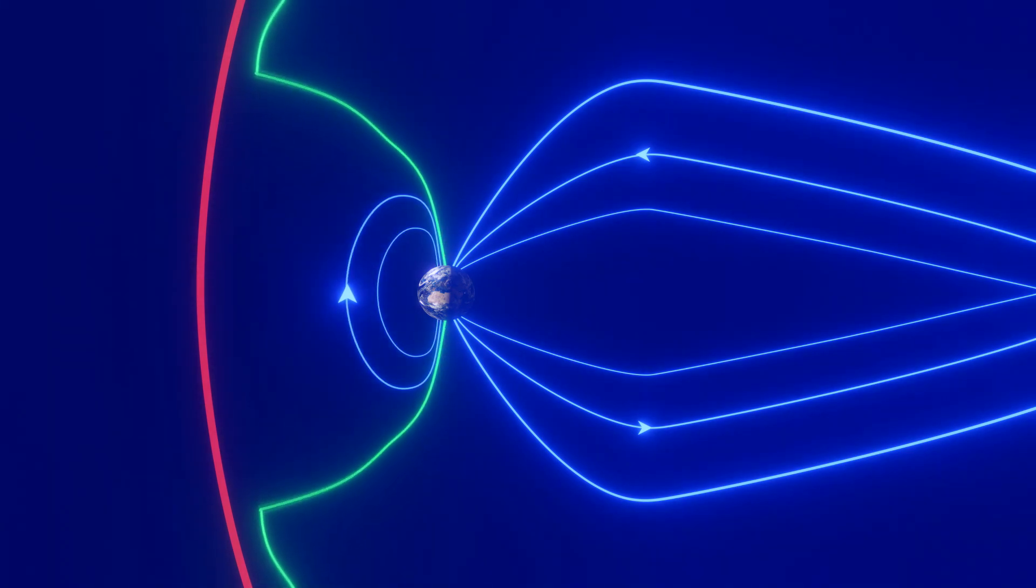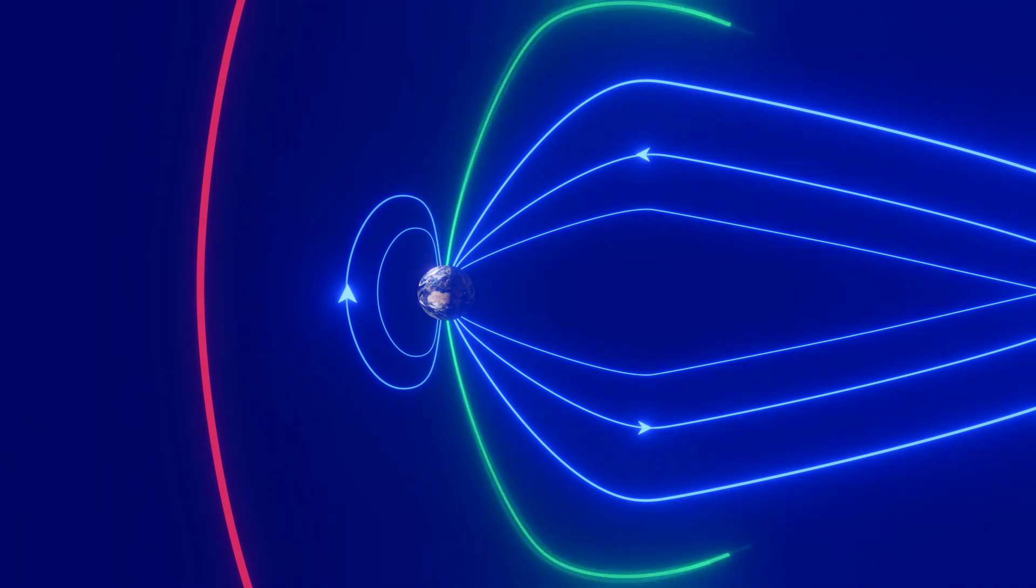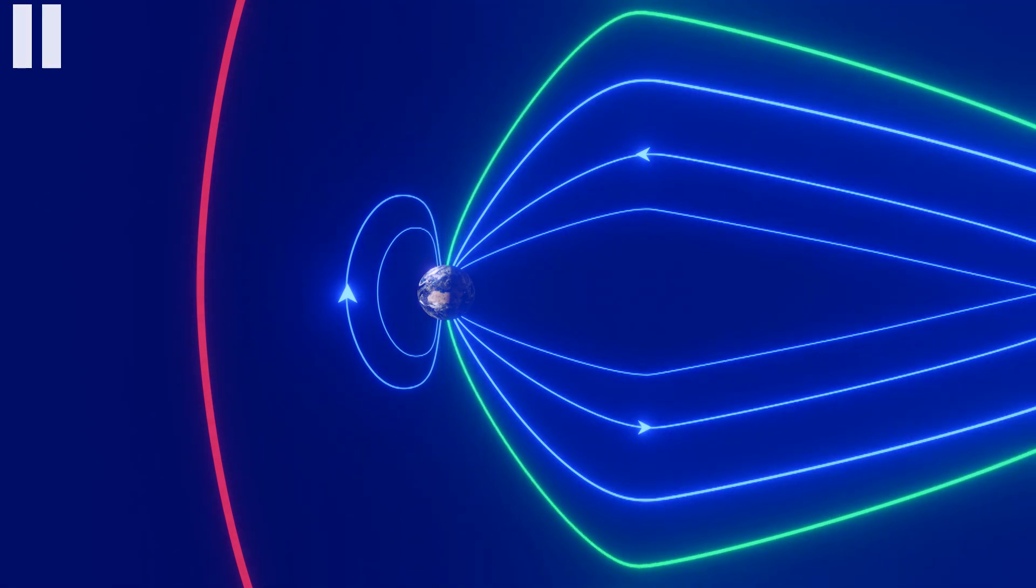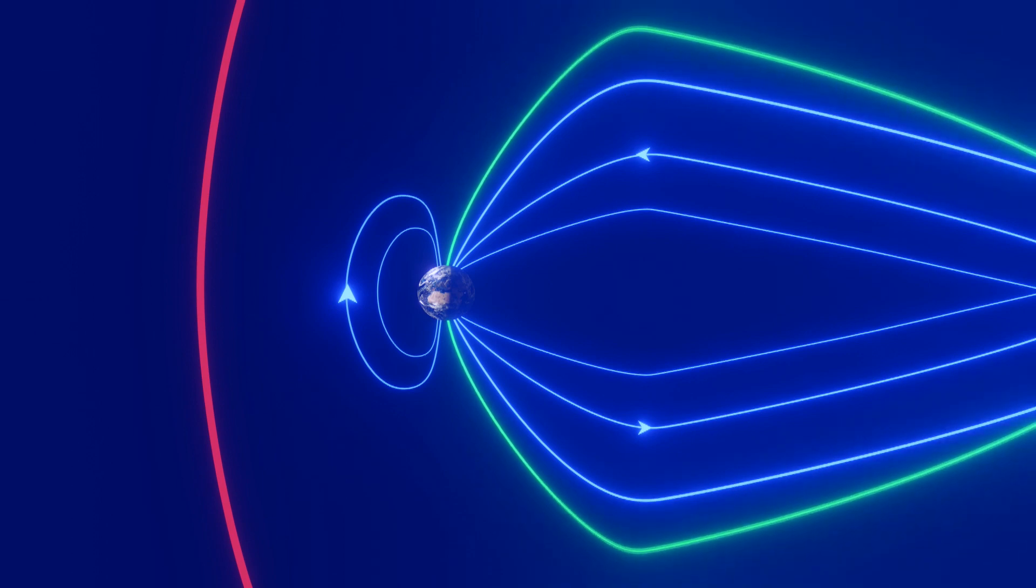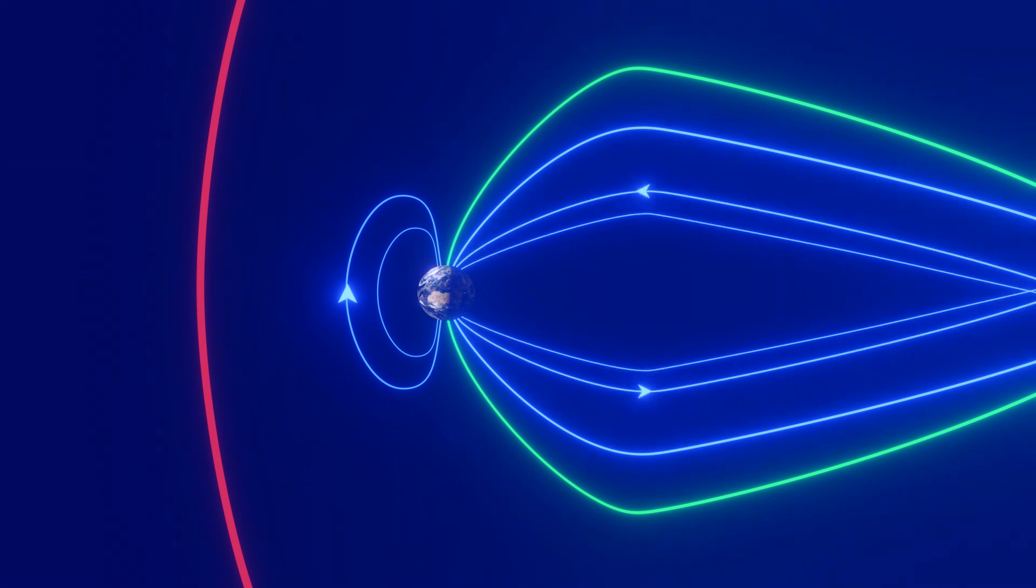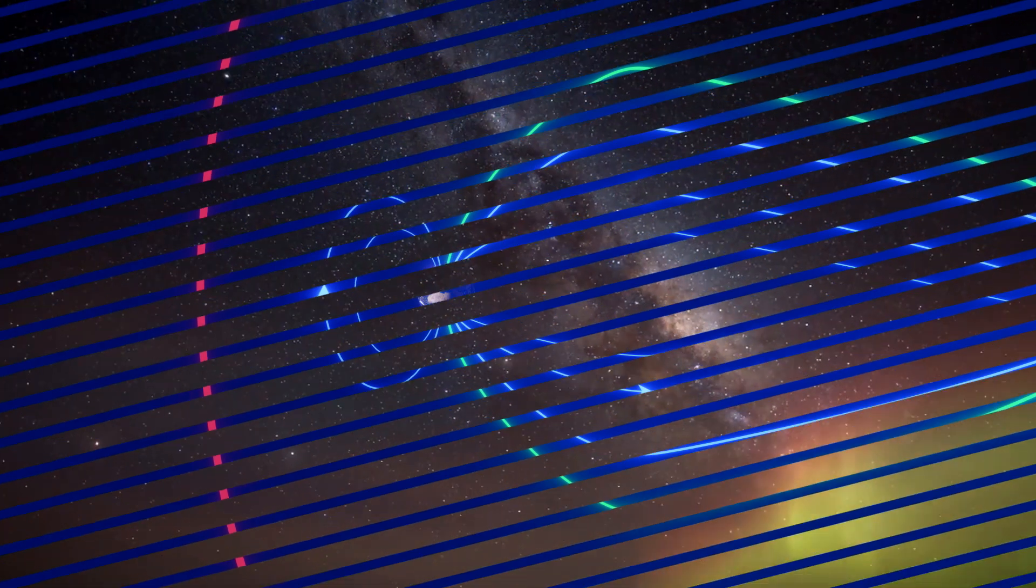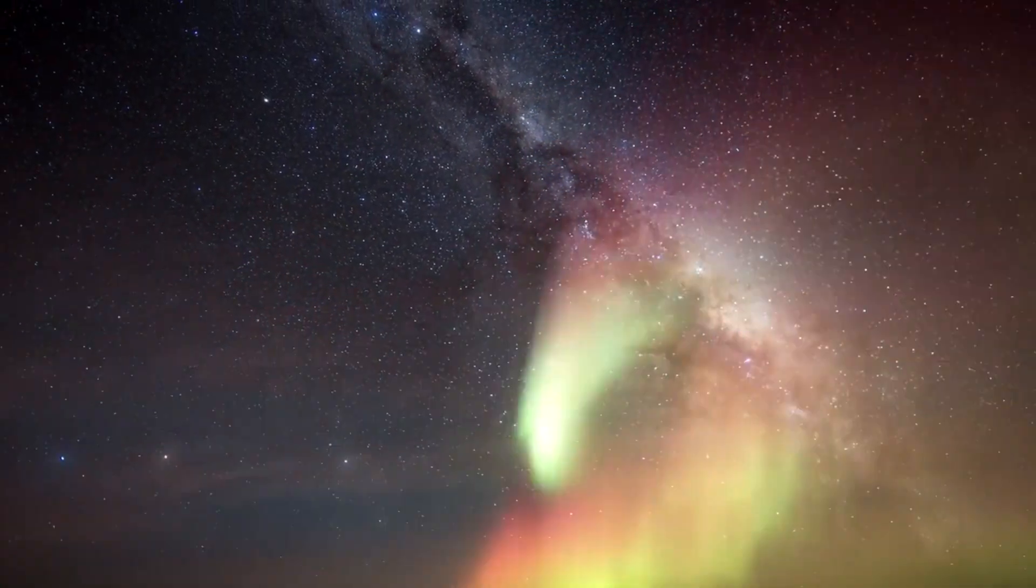The field lines just mentioned snap back to the magnetic tail and form closed field lines once again. In turn, this exerts more pressure on the magnetic tail, which closes inwards. Then the opposing magnetic field lines of the magnetic tail reconnect, accelerating ionized particles from the Van Allen belts and from the trapped CME particles along the field lines into both poles, creating the nighttime aurora that we have marveled at for centuries.